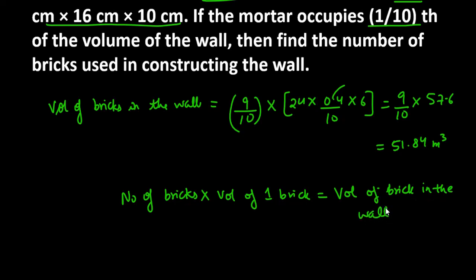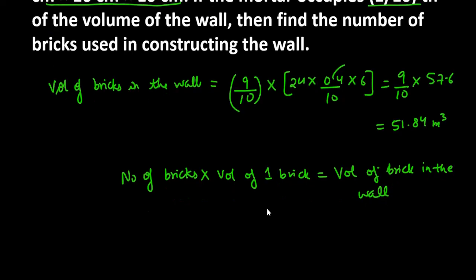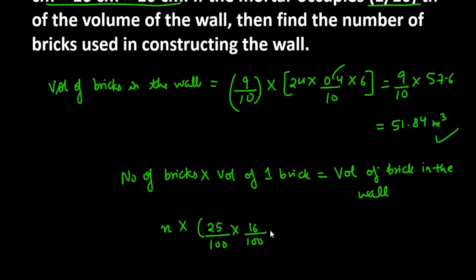Now you have all the values. We will find the number of bricks — let's call it N. The volume of one brick uses dimensions 25 over 100, since these values are in centimeters and we have to convert them into meters. The total volume of bricks in the wall is 51.84 meter cube, so we need to convert the left-hand side into meters as well.